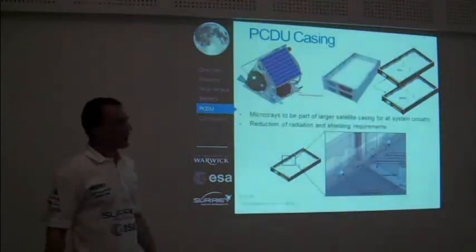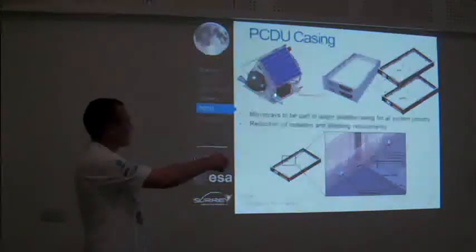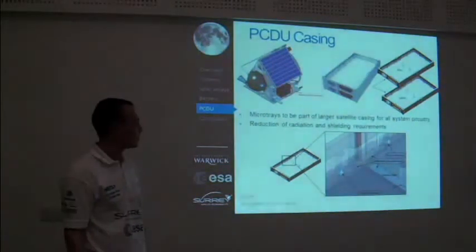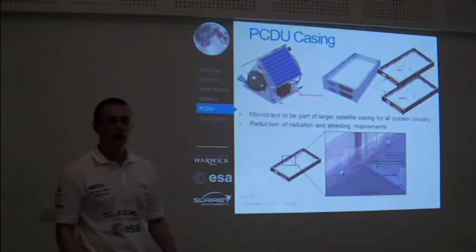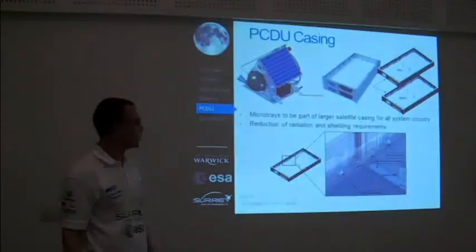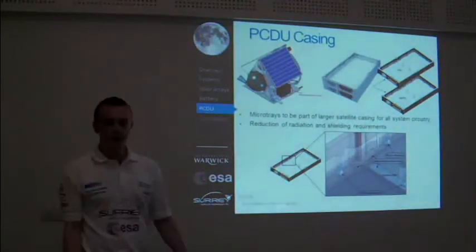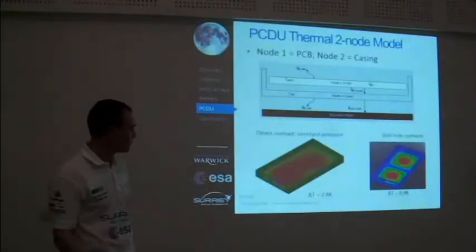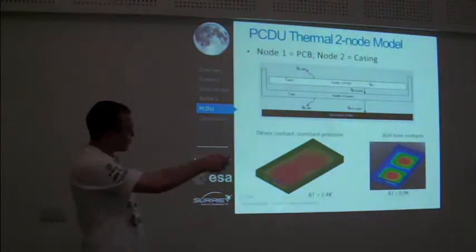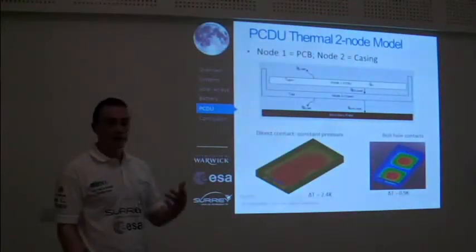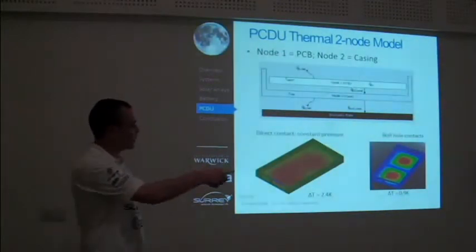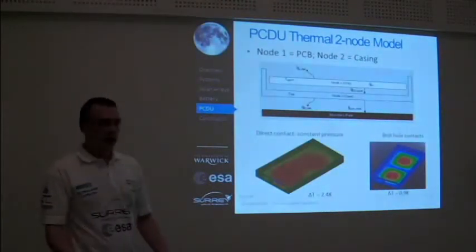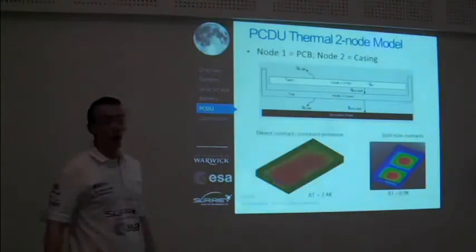The PCDU will be located in the avionics stack, taking up two microtrays. The top microtray will be the power management unit, containing auxiliary electronics interfacing via a CAN node, which will not be of particular thermal interest as they generate little heat. The solar array regulation units will be the MPPTs, whose inefficiencies will generate approximately 20 watts throughout the system. We started with a reduced two-node model: all heat generated at the PCB is transferred by conduction to the case. The PCB has very low thermal conductivity at 0.25 W/m·K, while the case has very high thermal conductivity at 166 W/m·K.